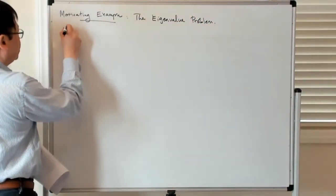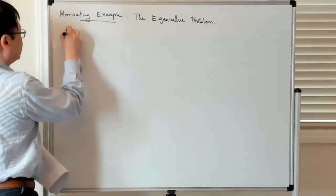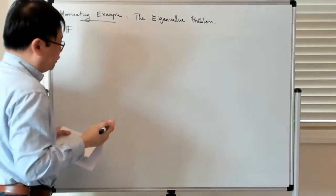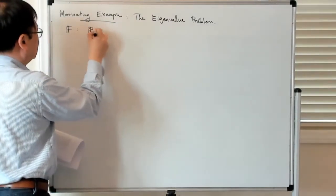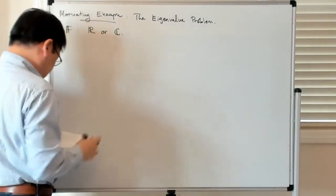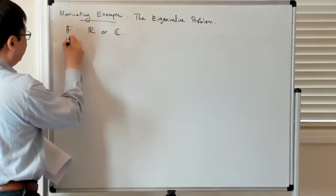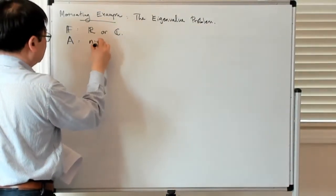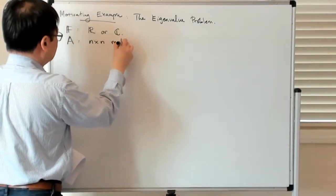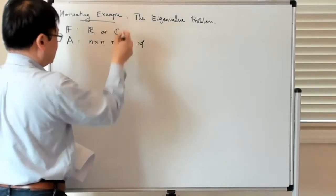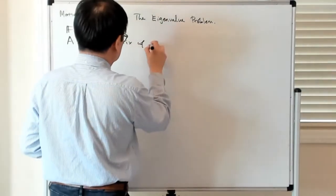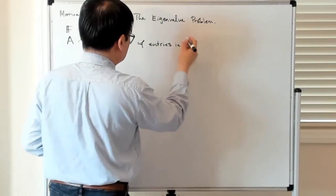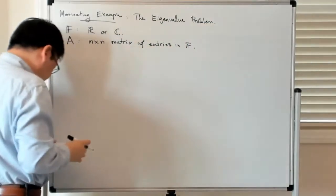So a bit of notation. We're going to have F denote a field, and in particular it could be the reals or the complexes. And then we have a matrix A, which is an n by n matrix with entries in either the reals or complexes, which I denote by F.